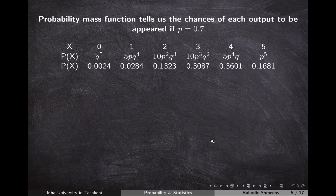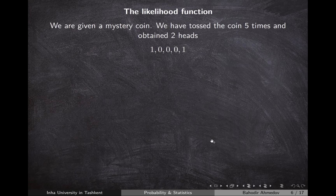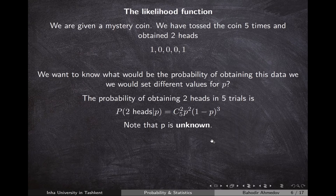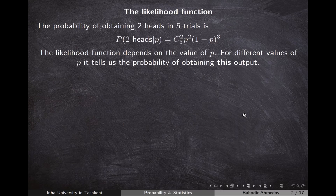Now let's say we're given a mystery coin and I don't know what the parameter p is — the probability of getting heads. I toss it five times and get 2 heads. I'd like to know what the probability of obtaining 2 heads would be for different values of p. That probability is C(5,2) · p² · (1−p)³, where p is unknown. This function is called the likelihood function — it tells us the probability of obtaining this data for different values of the parameter p.